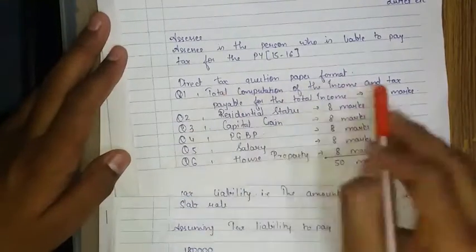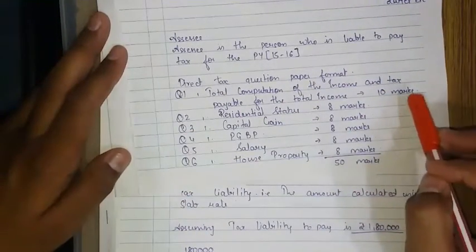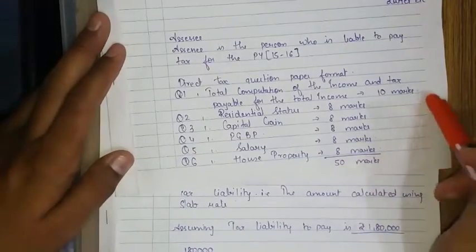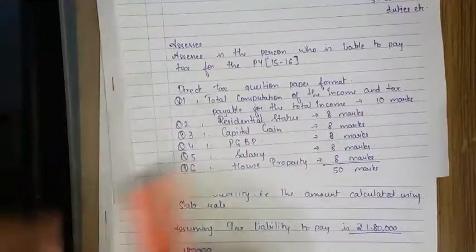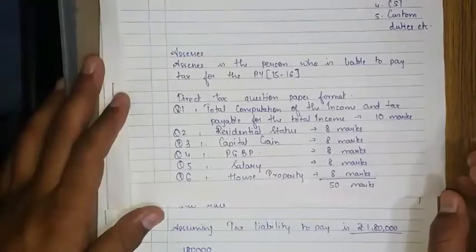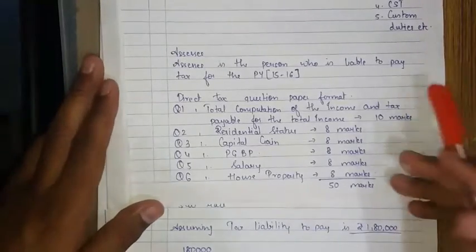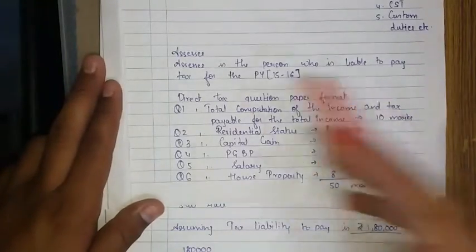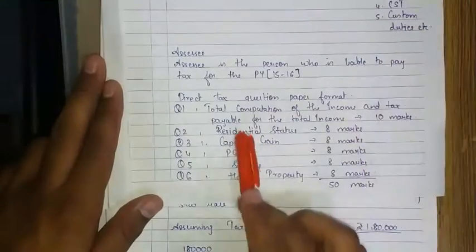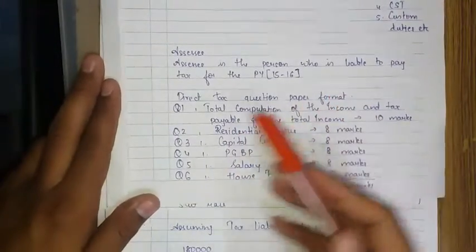Totaling all the income and finding out the total tax liability that a SAC has to pay is this question. 10 months - it is not a big deal, it is a simple chapter. Residential status - it is a simple thing. Many of you have heard NRI and you have asked your parents.